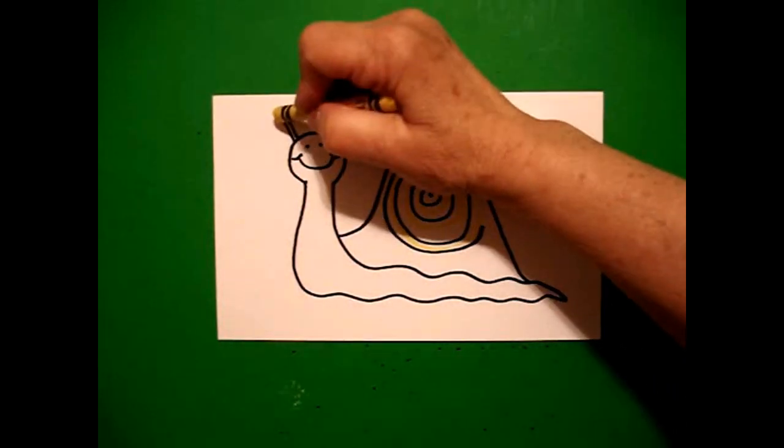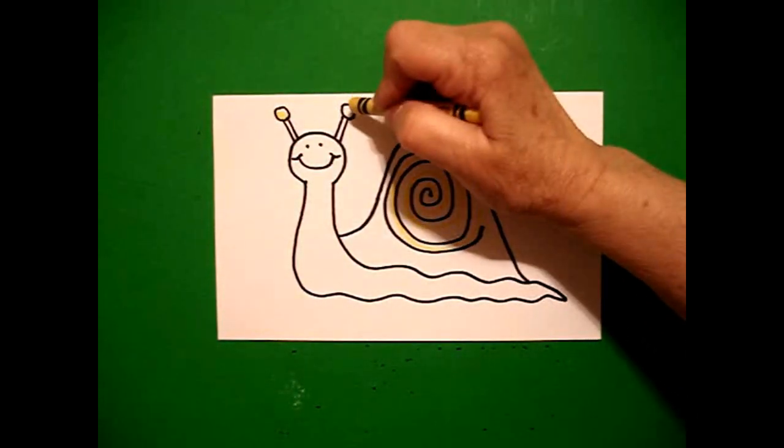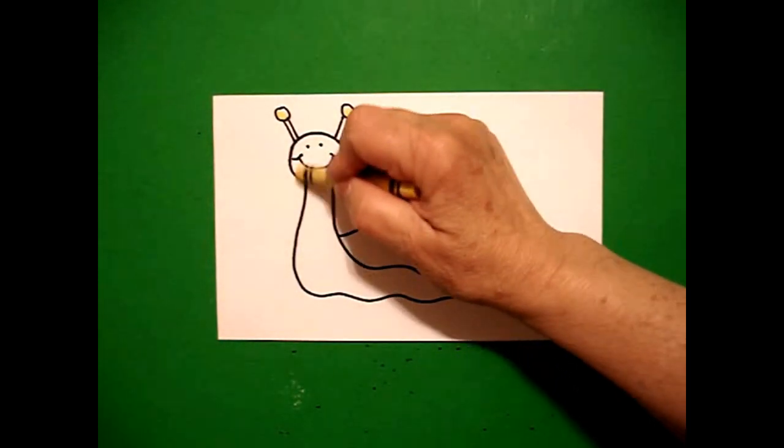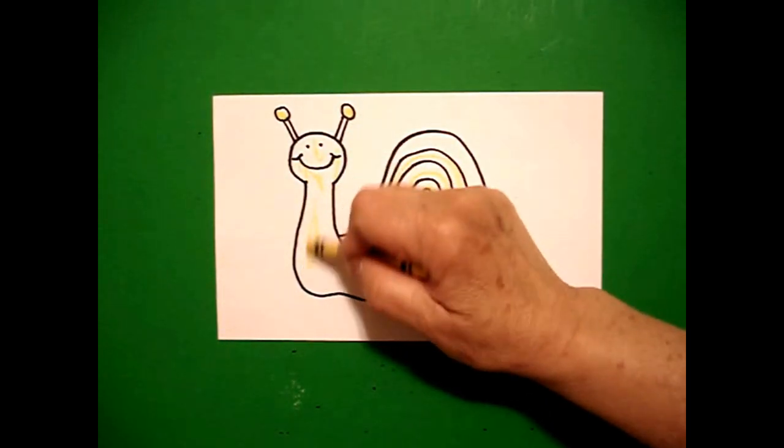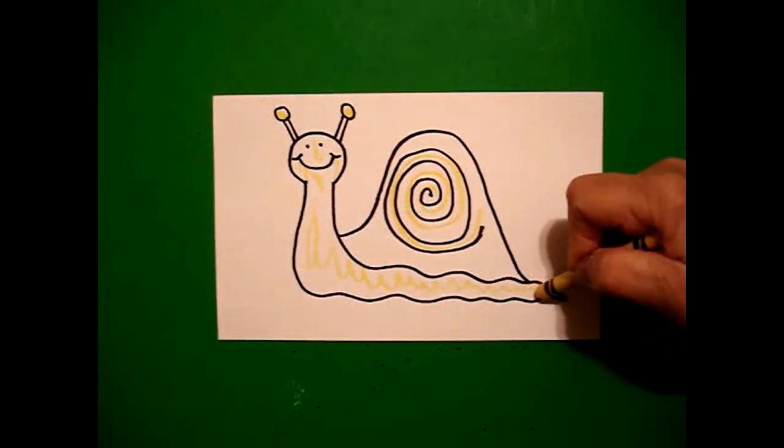I'm going to color this section of my antennas yellow and I'm going to color the face and this main section of the body also yellow.